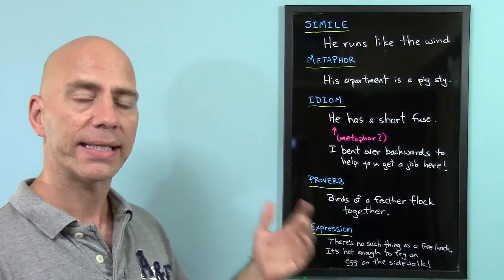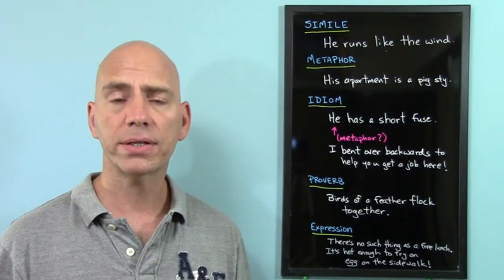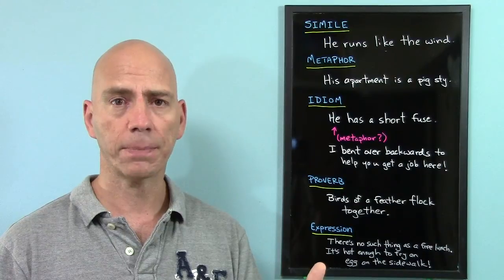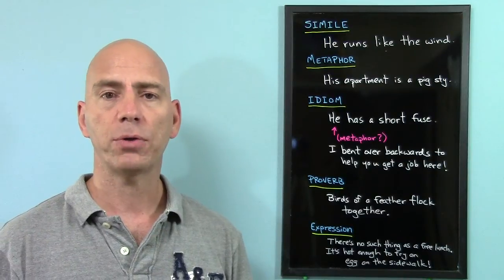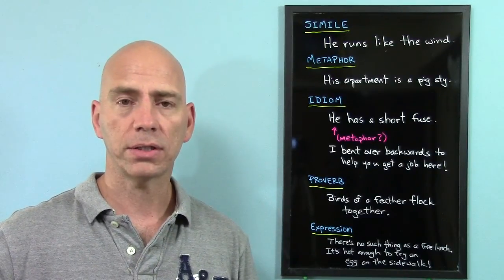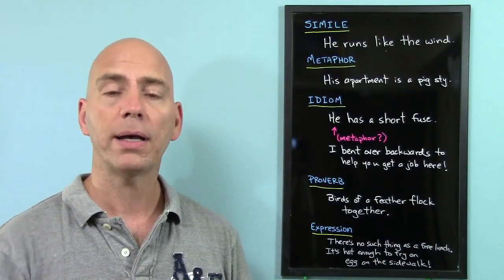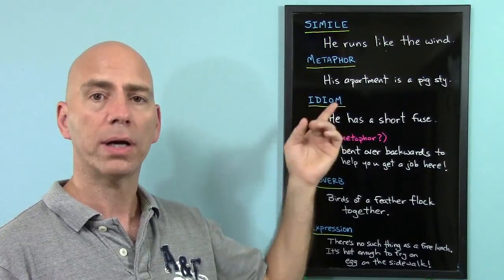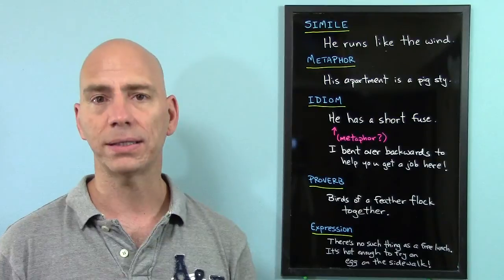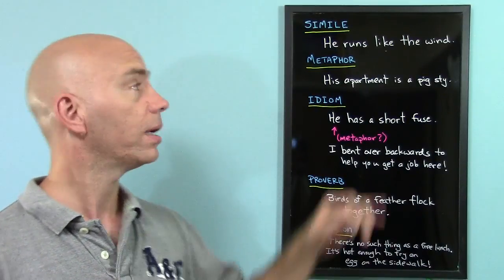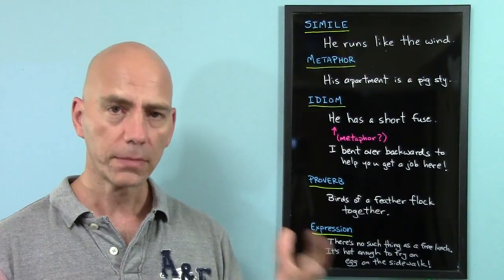So first on the list is a simile. A simile is when we make a comparison between two things. For example, he runs like the wind. So I'm using the wind, which is often very fast, to describe how fast he runs. This means he runs very fast. But because I'm using the word like, this is a simile.